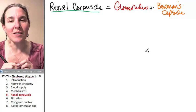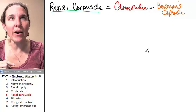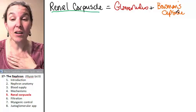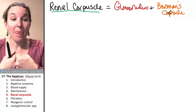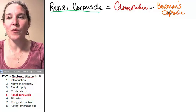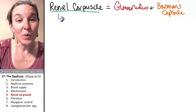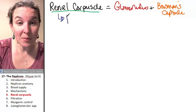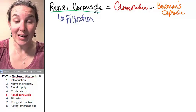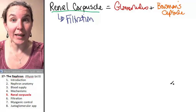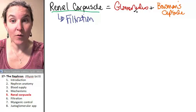The renal corpuscle is where filtration occurs. It's where blood and nephron come together to allow filtration — that's why it's significant. You can commit this to memory: this is the only place where filtration occurs. Filtration only happens from the glomerulus into Bowman's capsule.